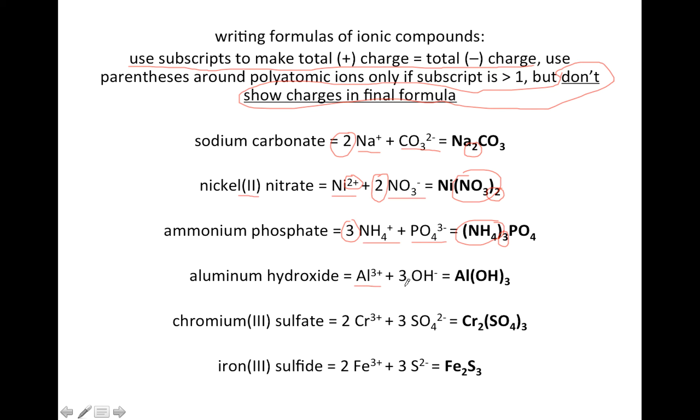Aluminum hydroxide. Aluminum is always plus 3. Hydroxide is known to be minus 1, so we're going to need three hydroxides to balance out the plus 3 charge. We're going to put hydroxide in parentheses and make the 3 into a subscript.